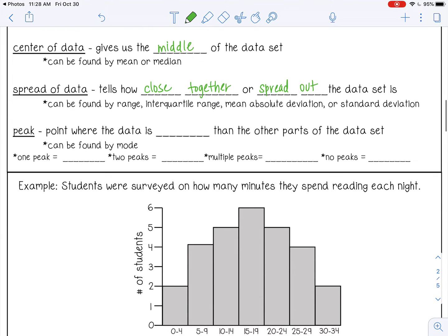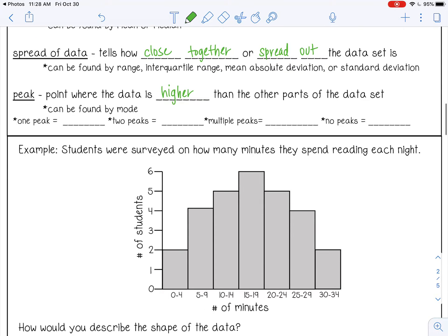A peak is a point where the data is higher or greater than the other parts of the data set, and it can be found by mode. So if you just have one peak in your data set, and what I mean by peak is if you look at this shape below, you have one peak, one part that's higher than all the rest. That is unimodal, or it just means one mode.